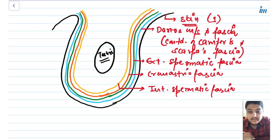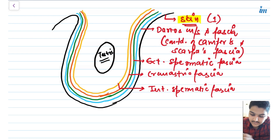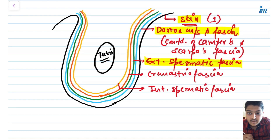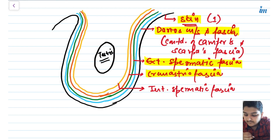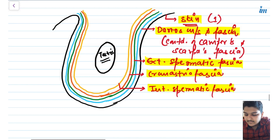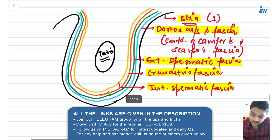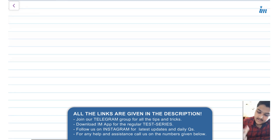So the five layers of the scrotum are: skin, dartos muscle and fascia (continuation of Camper's and Scarpa's fascia), external spermatic fascia (continuation of external oblique aponeurosis), cremasteric fascia (continuation of internal oblique), and internal spermatic fascia (continuation of fascia transversalis).